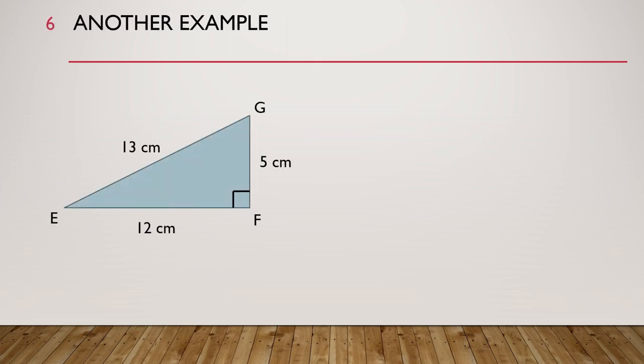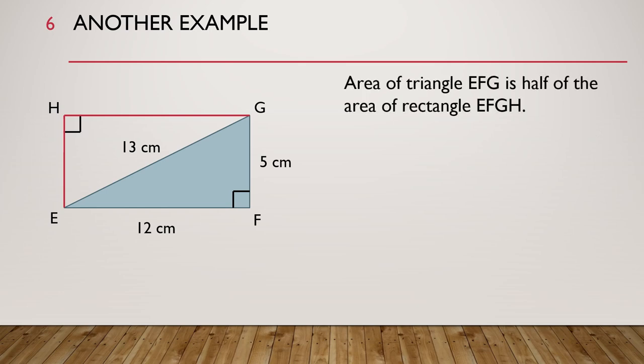Let's look at another example. Here we have another right-angled triangle, triangle EFG. Again, if we draw two lines out like this, we will get a rectangle EFGH. The area of triangle EFG is half of the area of rectangle EFGH.